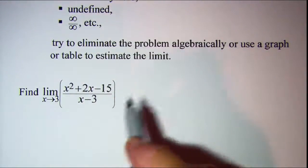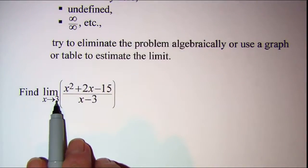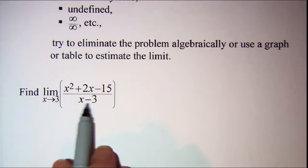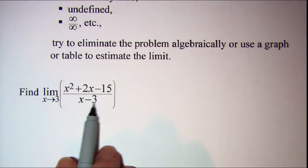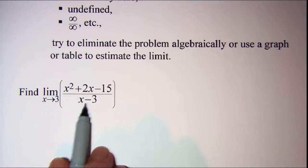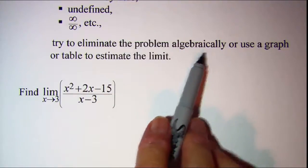Now in this problem, if we try direct substitution, we can see that when we put 3 into this denominator, 3 minus 3 is 0, and division by 0 is undefined. So in this case we have to try to eliminate the problem algebraically.